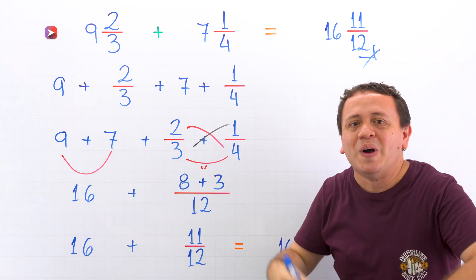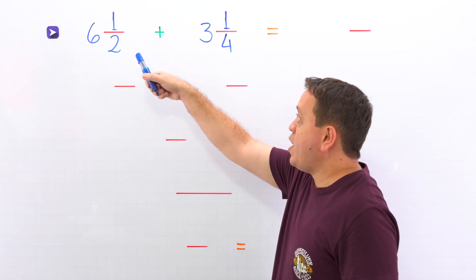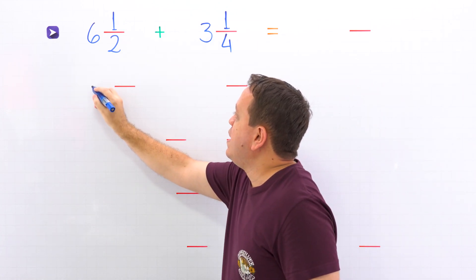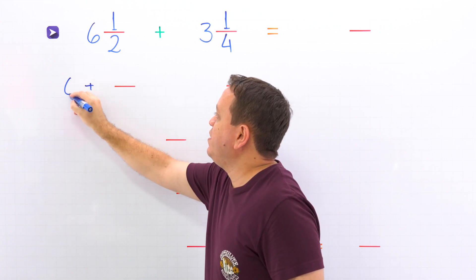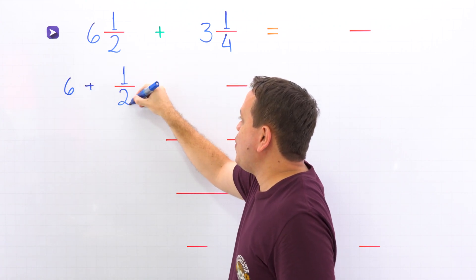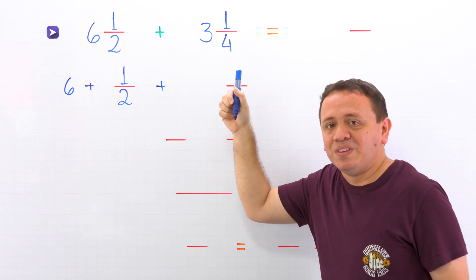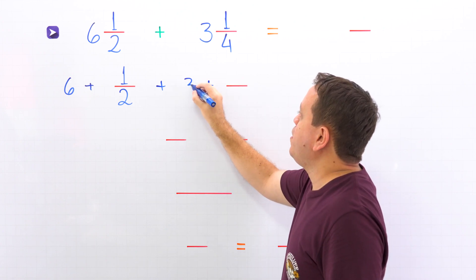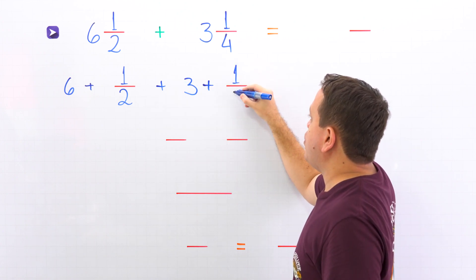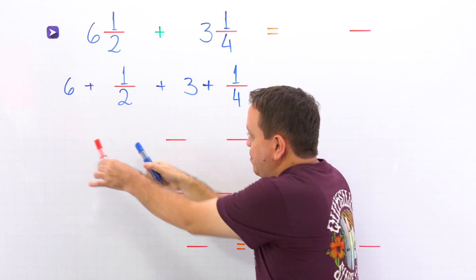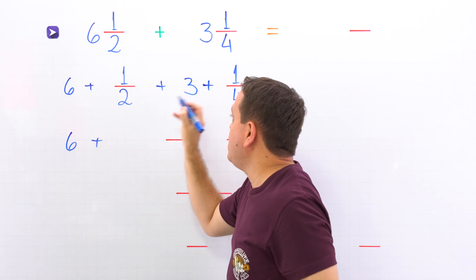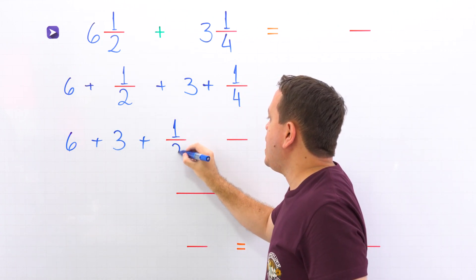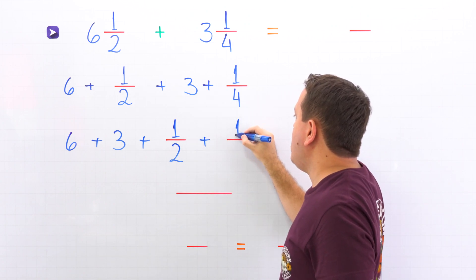Let's move on to another example. In the second example, we will add 6 and 1 half plus 3 and 1 fourth. First, we rewrite the mixed number 6 and 1 half as the sum of a whole number 6 and a proper fraction 1 half. Now we put the plus sign, and over here we do the same — we rewrite the mixed number 3 and 1 fourth as the sum of a whole number 3 and a proper fraction 1 fourth. Now we put the fractions at the end: 1 half plus 1 fourth.